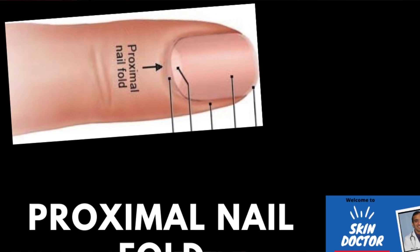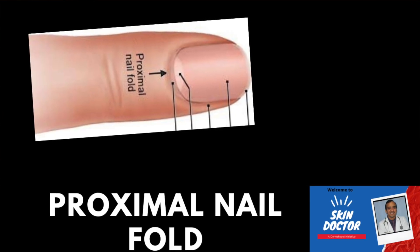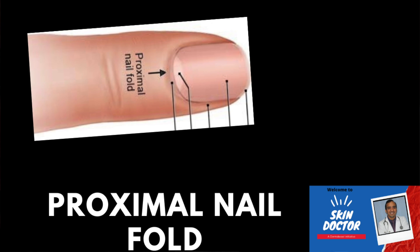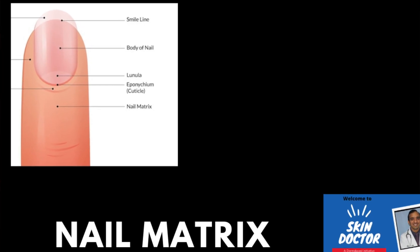Onychomatosis is a condition where the nails separate from the nail bed at the proximal end of the nail. Our nail has two ends: the outer end, called the distal end, and the inner end, called the proximal end. In onychomatosis, the nail separates from the nail bed from the proximal end. The part of the nail at the proximal end below the skin is called the nail matrix, from which the nail is born.